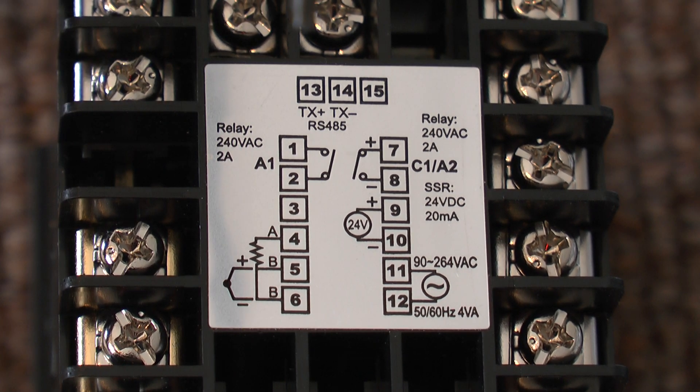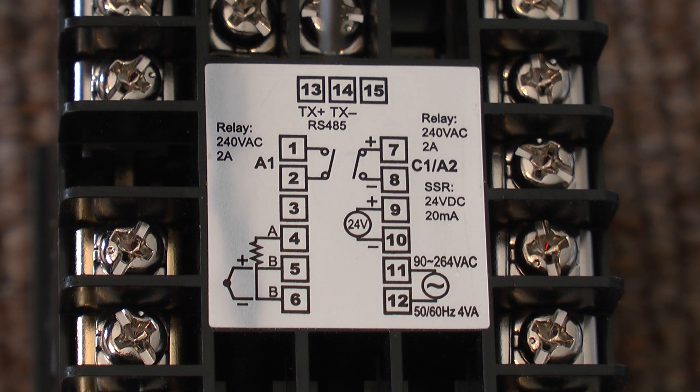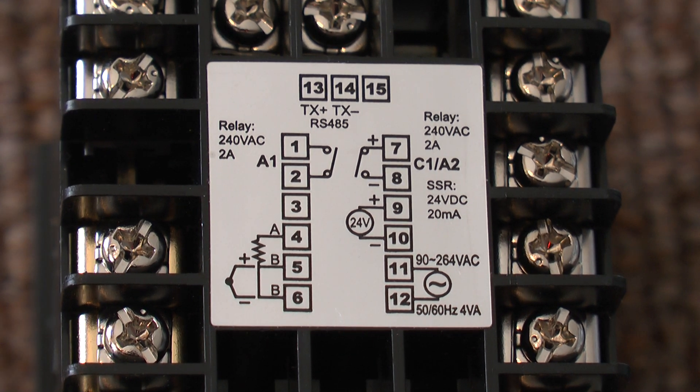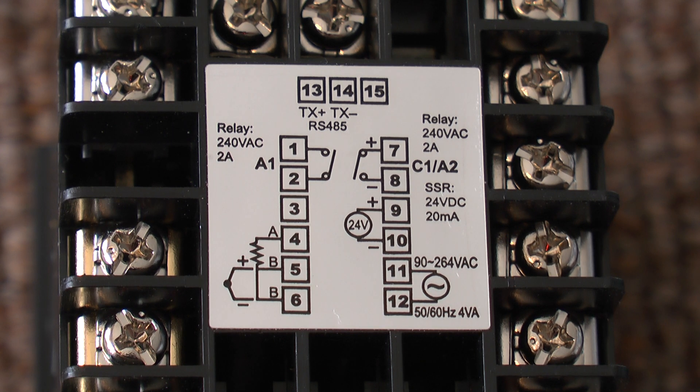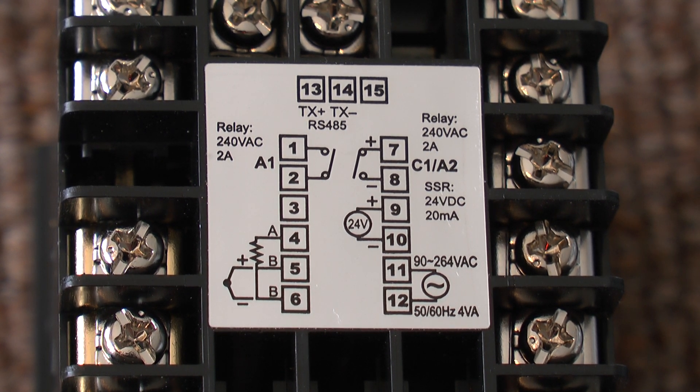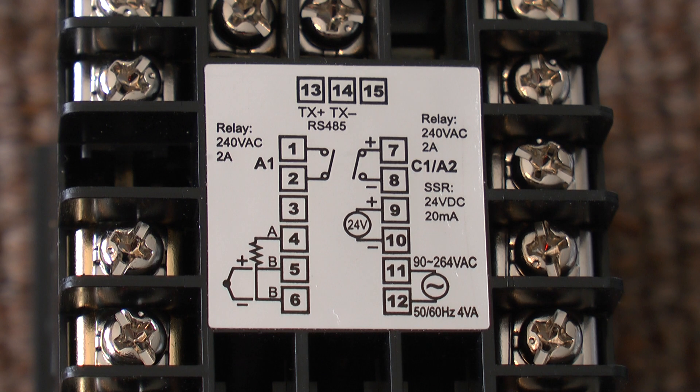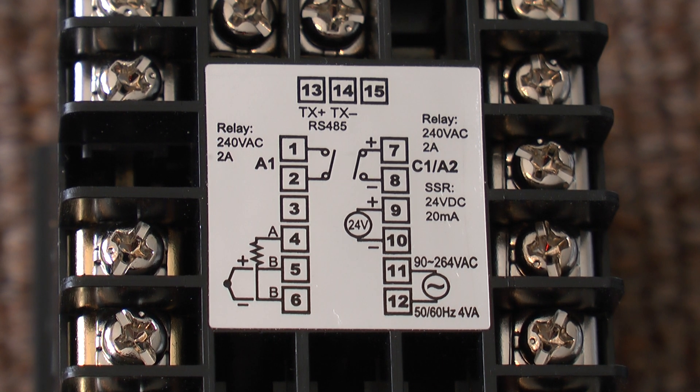If you have chosen an RS485 option, then terminals 13 and 14 are the terminals for that connection. The 24 volt DC output available on terminal 9 and 10 can only drive 4-wire transmitter devices because it is an extremely low power signal.